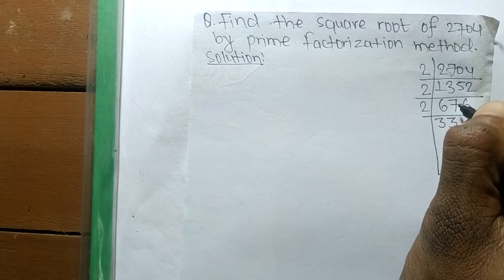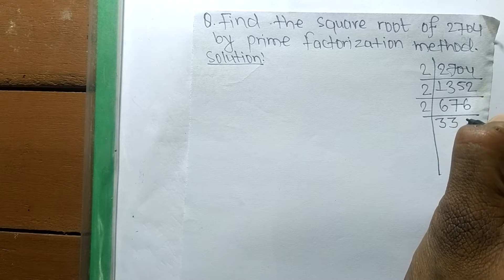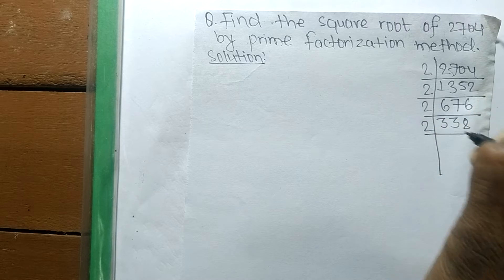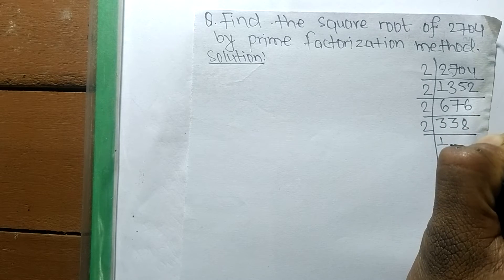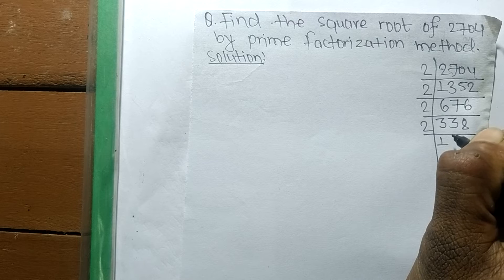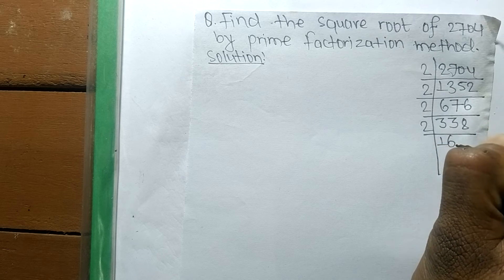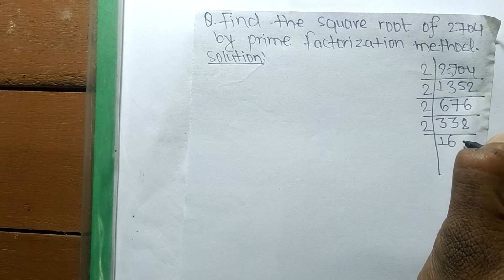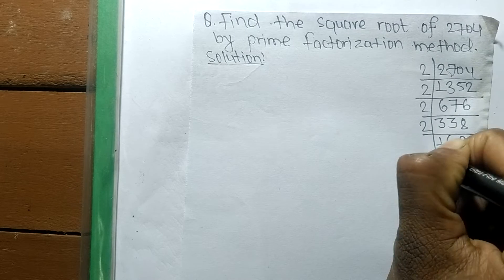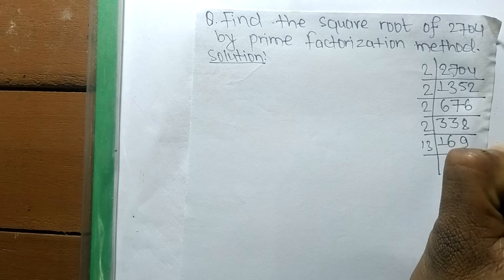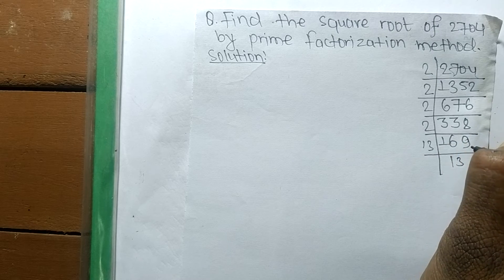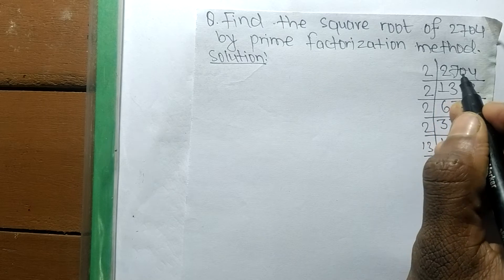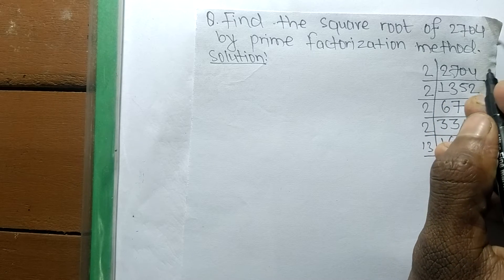Again, 2 times 3 is 6, and again 2 times 3 is 6, remainder 1. Bring down 6, making 16. 2 times 8 is 16. Continuing: 2 times 1 is 2, remainder 1. Bring down 3, making 13. 2 times 6 is 12, remainder 1. Bring down 8, making 18. 2 times 9 is 18. Finally, 13 times 13. We have now found the prime factors of 2704.